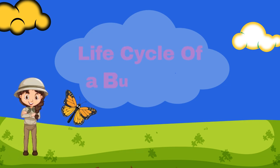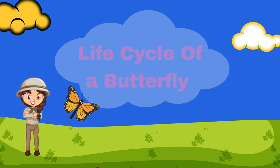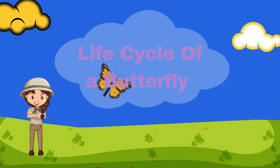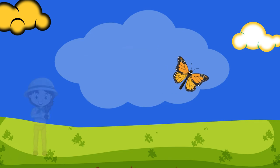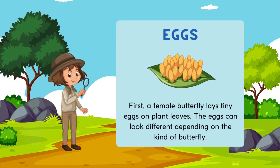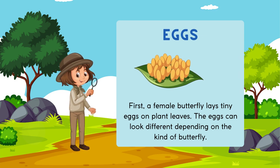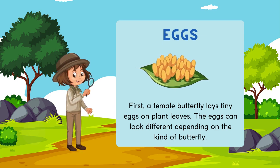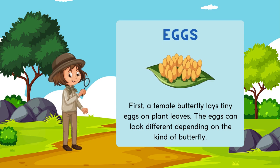Hello kids, are you excited to learn about the life cycle of a butterfly today? Let's start looking at the life cycle of a butterfly. First, what happens? A female butterfly goes and sits on top of a leaf and lays tiny eggs. These eggs can look different depending on the kind of butterfly. Can you see the little yellow eggs on the green leaf here?